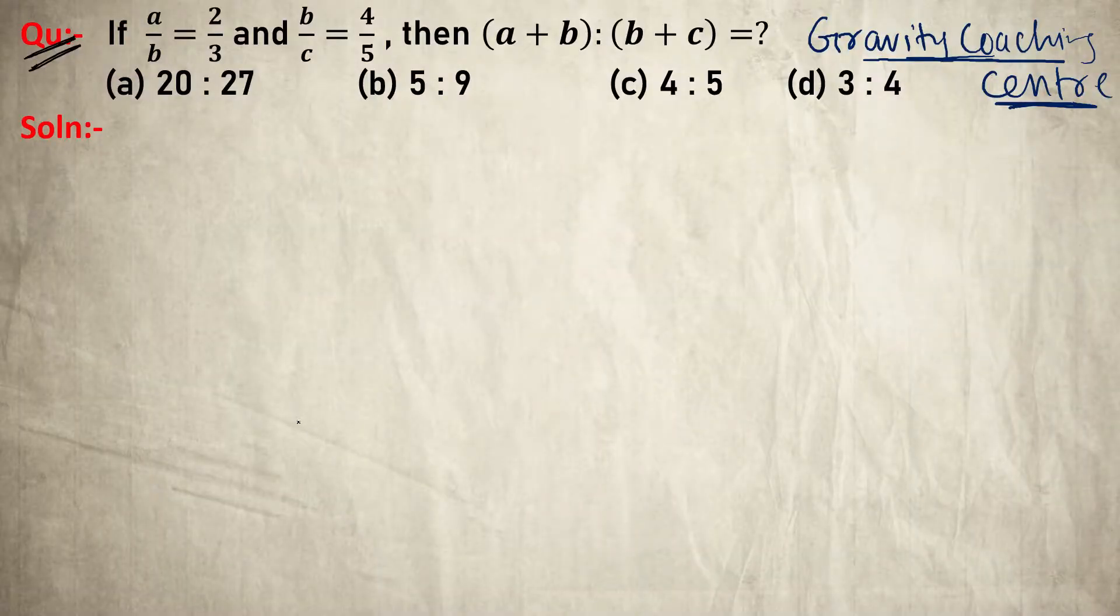The question: If a/b = 2/3 and b/c = 4/5, then what is (a+b):(b+c)? Given that a:b = 2:3 and b:c = 4:5.